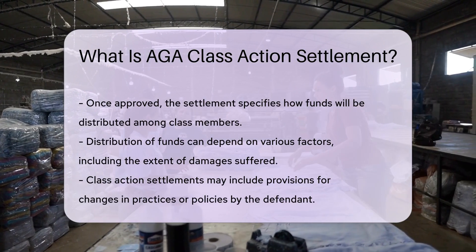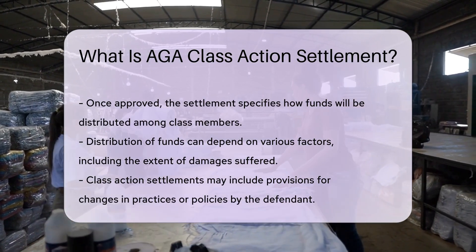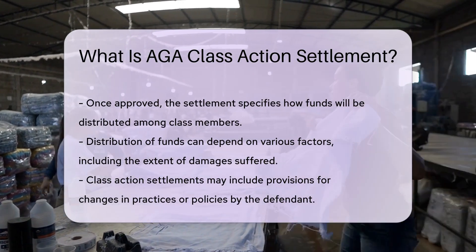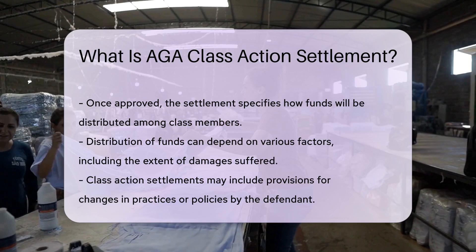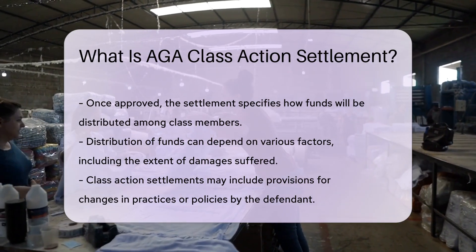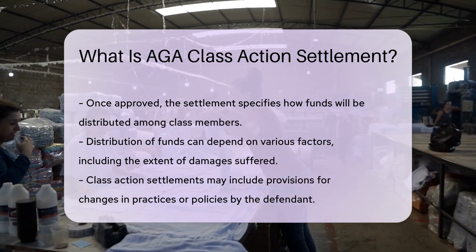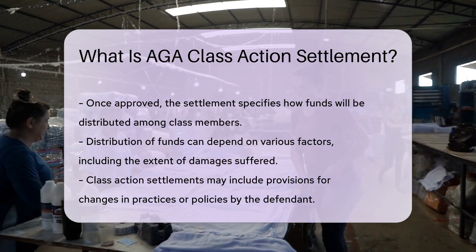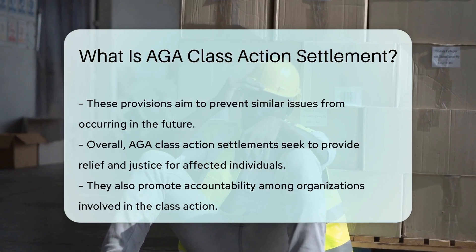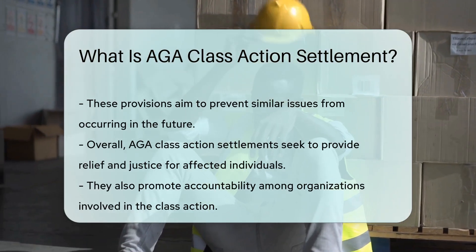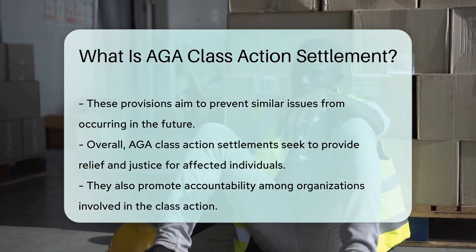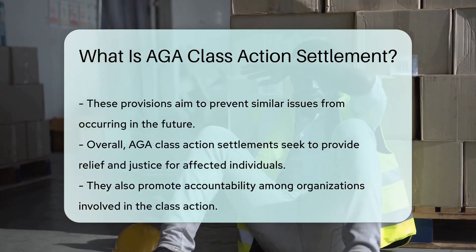Once approved, the settlement usually outlines how funds will be distributed among class members. This distribution can be based on various factors, including the extent of damages suffered by individuals. Class action settlements can also include provisions for changes in practices or policies by the defendant, ensuring that similar issues do not arise in the future.